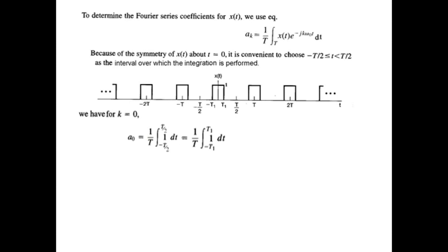We modify the integral to -t1 to +t1, and integrating, it becomes t. Putting in the two limits, that is t1 minus (-t1), minus minus becomes plus, so it becomes 2t1 divided by T. This is the value at a₀.